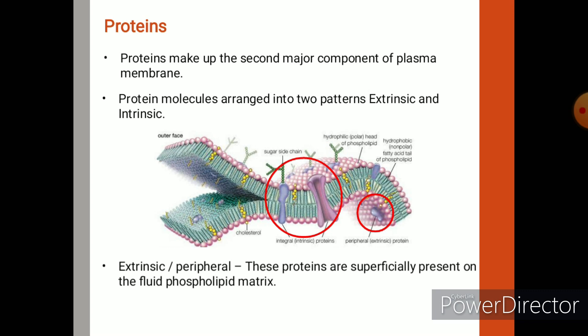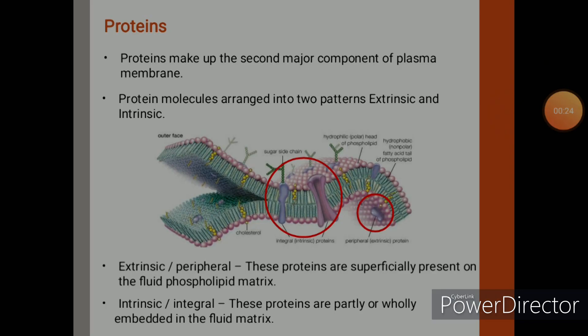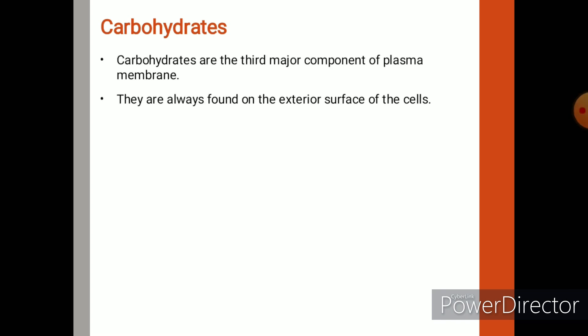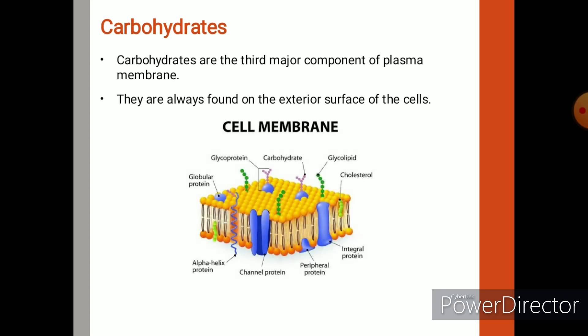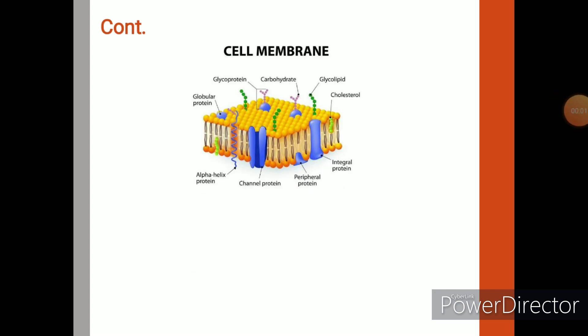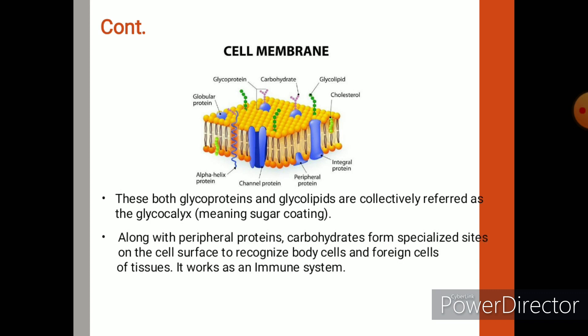Extrinsic proteins are present on the surface of the bilipid layer, whereas intrinsic proteins are totally embedded in the fluid matrix. Extrinsic proteins are always found on the outer surface of the cells. If carbohydrates are bound to proteins, they are called glycoproteins. These glycoproteins and glycolipids combined are called glycocalyx, which means sugar coating. Glycocalyx is highly hydrophilic and attracts a large amount of water.